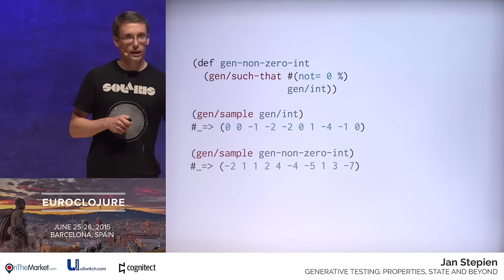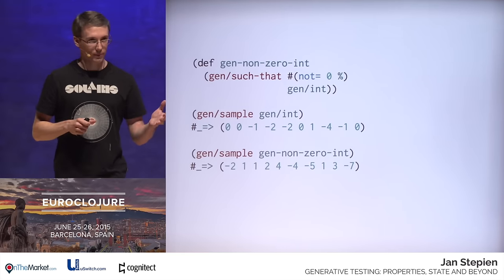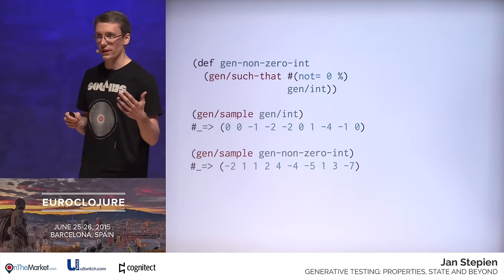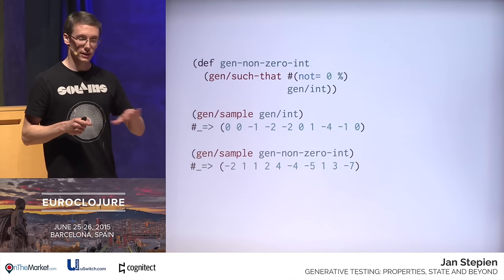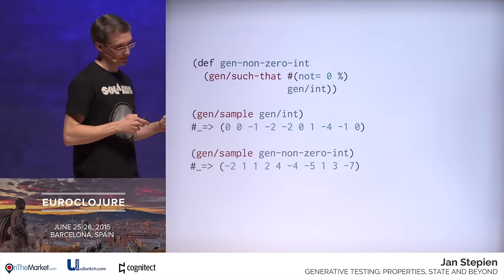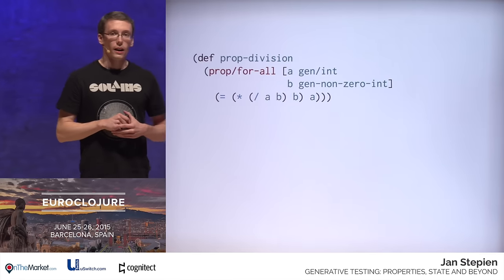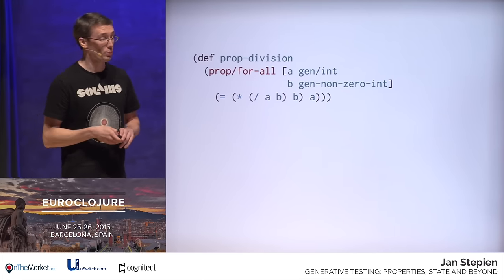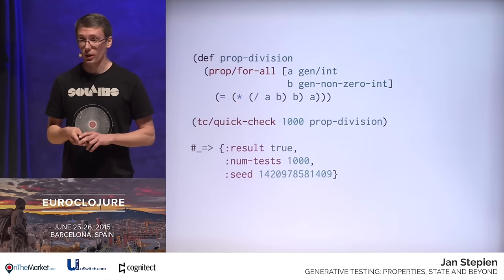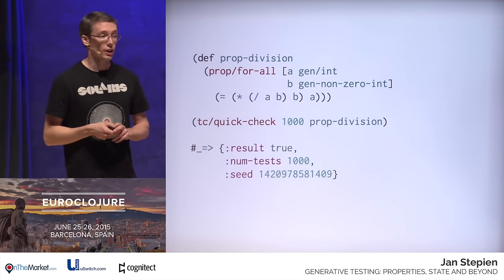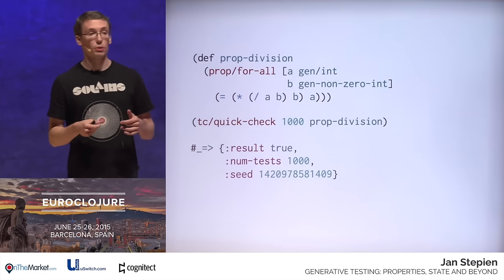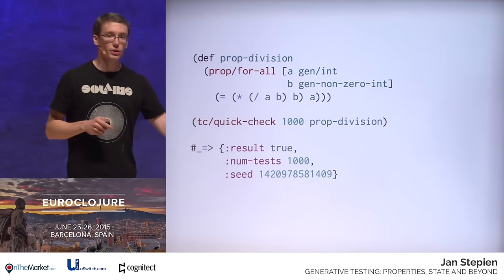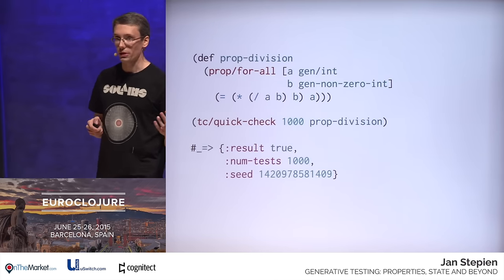Using `gen/sample`, we can take a look at values generated by various generators. Here we can see that the generator of integers generates ints just as before, and our new derived generator excludes all the zeros just as we wanted. Now we can plug in our newly defined generator and take a look at the result. We execute our tests again, and this time after 1,000 executions, TestCheck did not find any input values which would contradict what we claimed in the property. But as you remember, in our original tests we used doubles as well — let's extend our test to cover doubles.